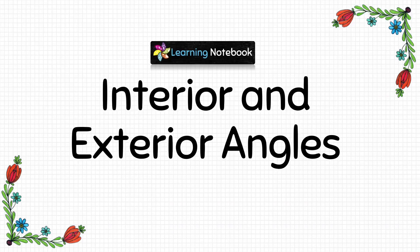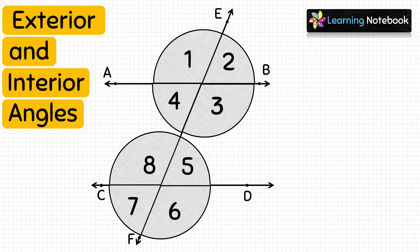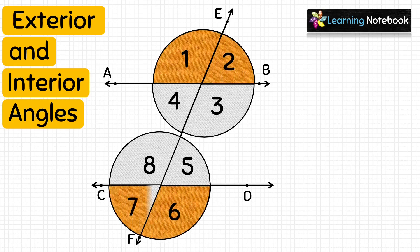First, let's color the exterior angles. Exterior angles lie on the exterior side of the transversal, so angle 1, angle 2, angle 6, and angle 7 are exterior angles — color them with your favorite color. Next, we will color the interior angles. Interior angles lie on the interior side of the transversal, so angle 3, angle 4, angle 5, and angle 8 are interior angles.